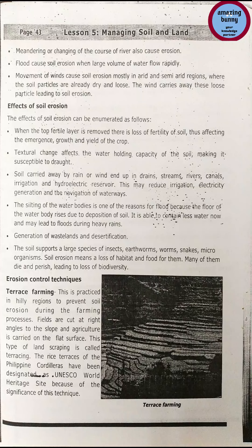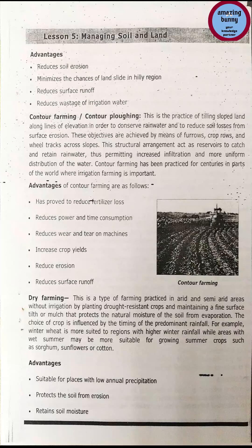Erosion control technique 1 — Terrace farming: practiced in hilly regions to prevent soil erosion during farming. Fields are cut at right angles to the slope and agriculture is carried on the flat surface; this land shaping is called terracing. The rice terraces of the Philippines have been designated a UNESCO World Heritage Site. Advantages include reduced soil erosion, minimized chances of landslide in hilly regions, reduced surface runoff, and reduced wastage of irrigation water.